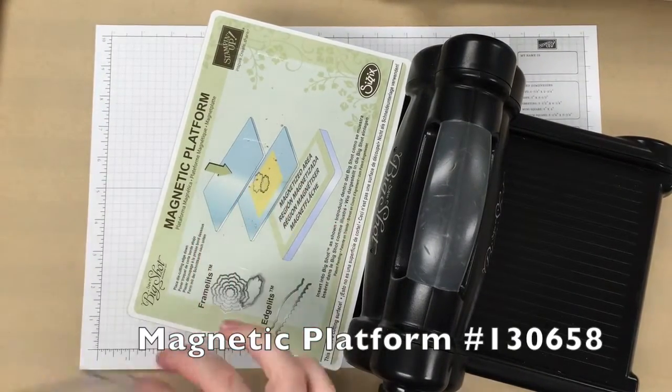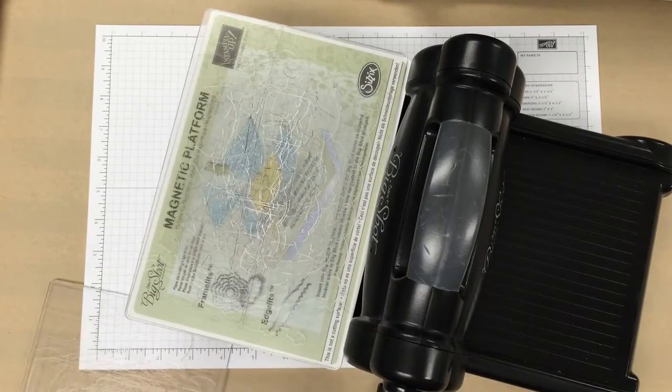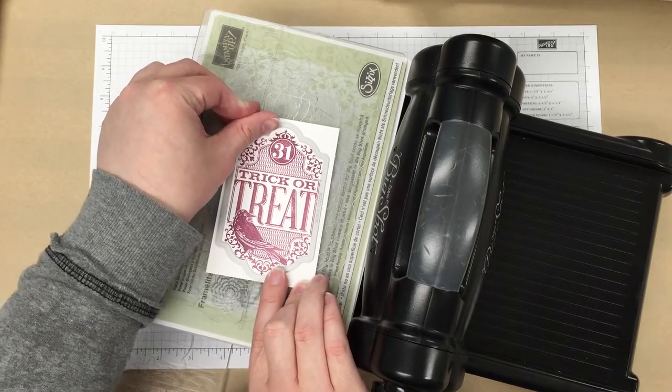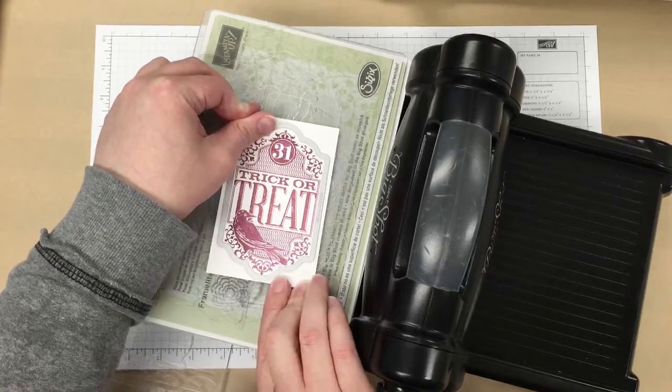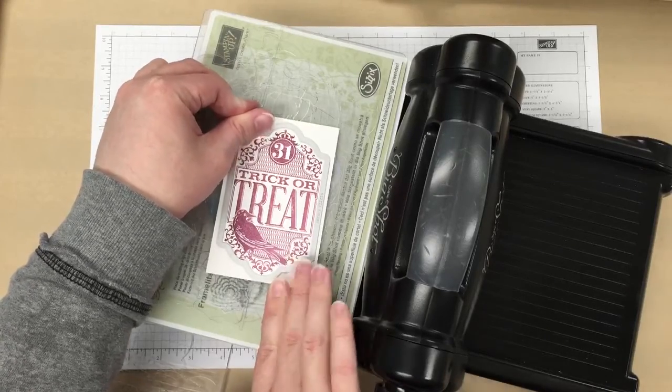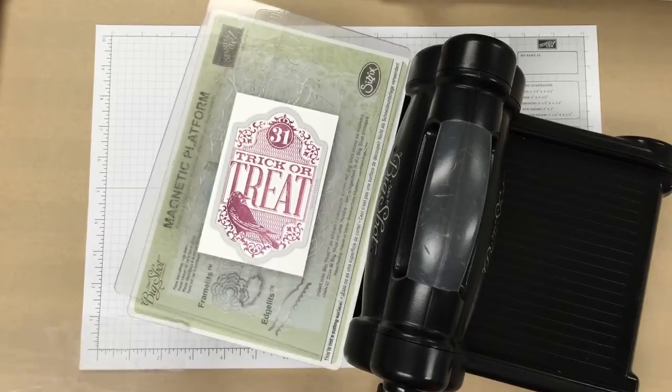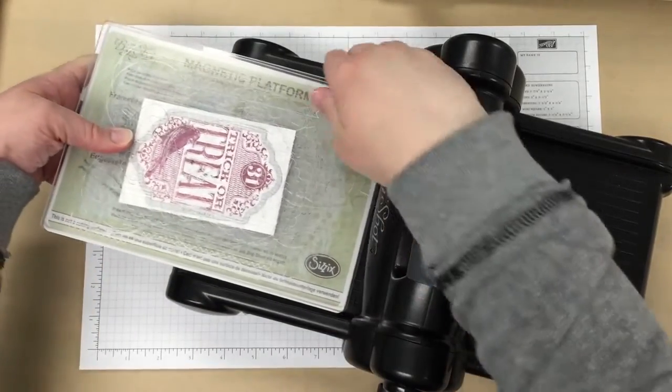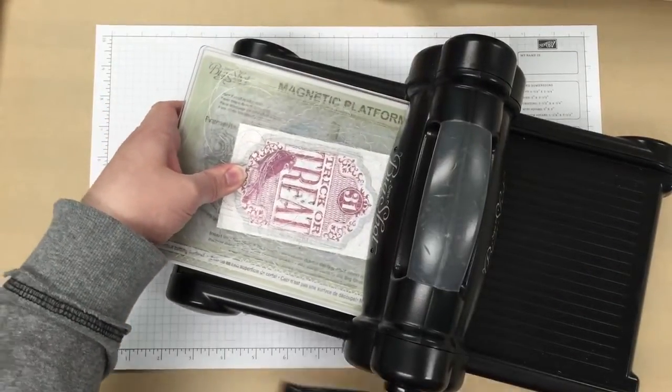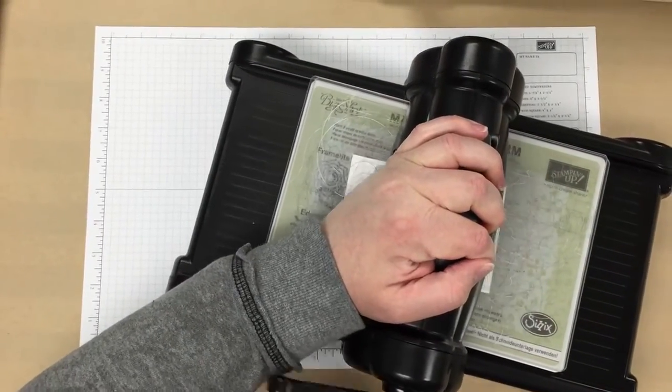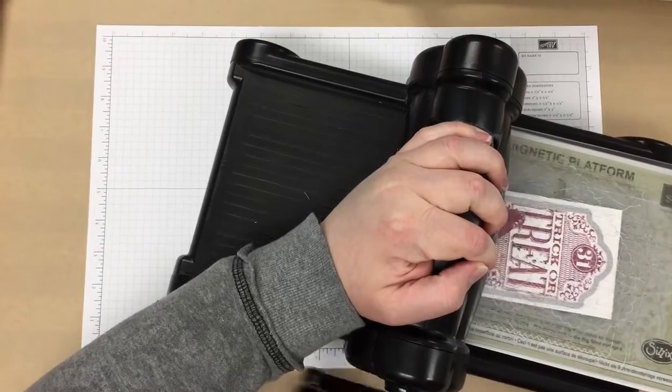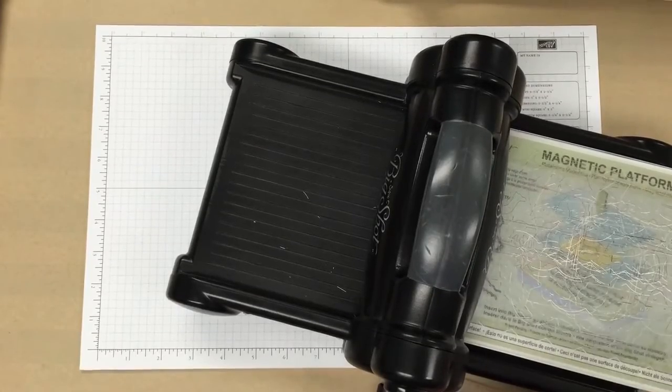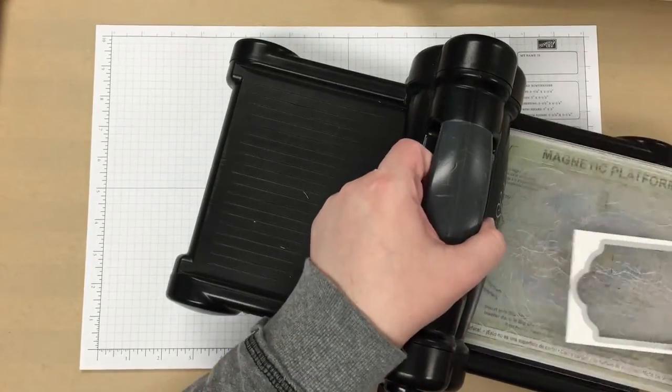So you first start with your magnetic platform, your first cutting plate, then you'll lay your cardstock down on that. We're going to put our framelit on top of that - let's make sure it's centered. You really do want to use your magnetic platform with this. It makes it a lot easier to keep that framelit in place as it goes through the big shot. It's best with the stamped images so that they're perfectly centered. Now we're going to roll this through, pop that out, and put our big shot off to the side.